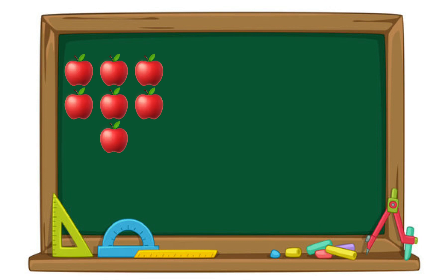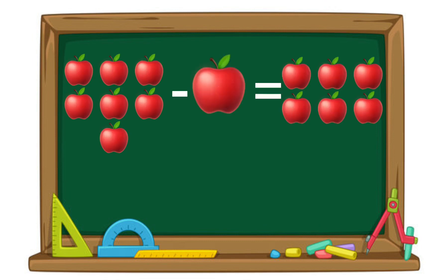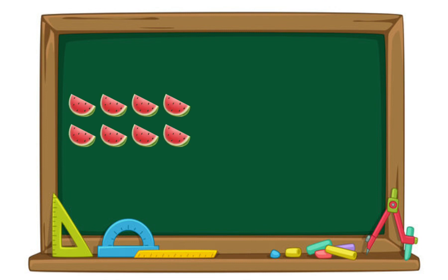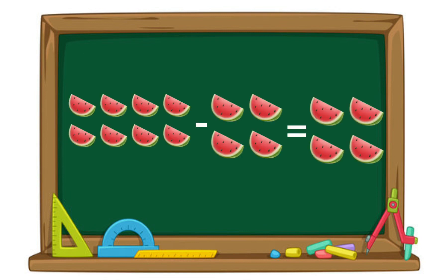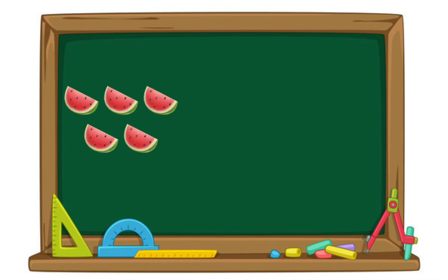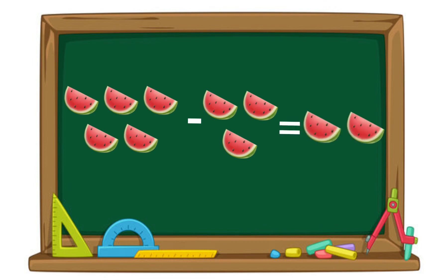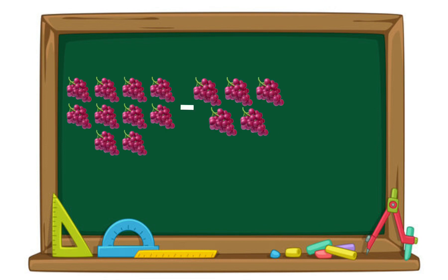7 apples minus 1 apple equals 6 apples. 8 watermelons minus 4 watermelons equals 4 watermelons. 5 watermelons minus 3 watermelons equals 2 watermelons. 10 grapes minus 5 grapes equals 5 grapes.